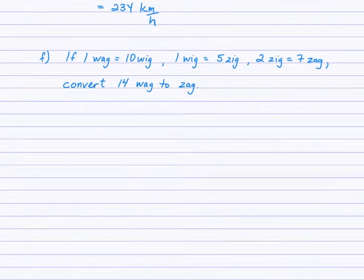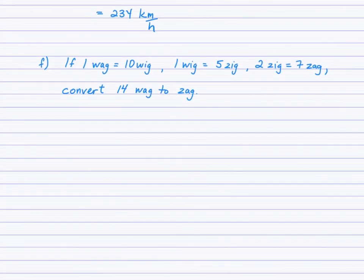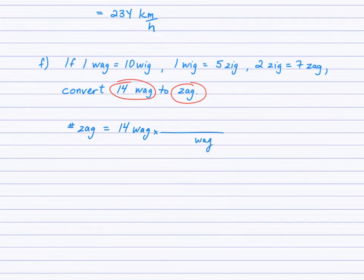Okay, so looking at F, you can see I'm ultimately asking you to convert 14 WAGs to Zags. So we're really looking for the number of Zags, starting with 14 WAGs. So we know in our conversion factor, WAGs will be down here. Can we go from WAGs straight to Zags? Well, when I read in the question, I've got WAGs to Wigs, and Wigs to Zigs, and Zigs to Zags. But I don't have WAGs directly to Zags. So I do have WAGs to Wigs, so that's where I'll start with this conversion factor, WAGs to Wigs. So go ahead and see if you can finish the question here, and then check back with the video.